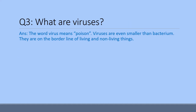Question number three: What are viruses? The word virus means poison. Viruses are even smaller than bacterium. They are on the borderline of living and non-living things, meaning we neither conclude them as living nor non-living things — they are at the border of both groups.